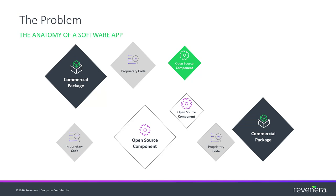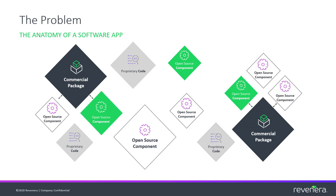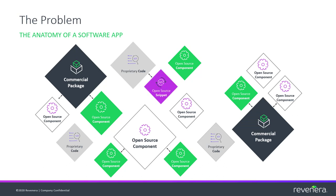Typically, applications today are comprised of many different elements including commercial packages, open source components, as well as your own proprietary code base. As you start to peel back the layers, you'll find that the commercial items that have been included may contain open source packages. The open source components that you know about will bring in other open source components. And finally, your own proprietary code may contain aspects of code that have open source origins, such as an example function from Stack Overflow or GitHub.